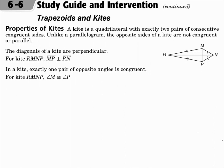A kite is a quadrilateral with exactly two pairs of consecutive congruent sides. Unlike a parallelogram, the opposite sides of a kite are not congruent or parallel. Some properties of kites: the diagonals are perpendicular, and exactly one pair of opposite angles is congruent. Use these properties to solve the problems.